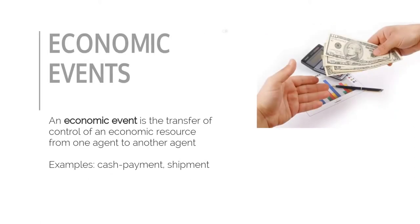Economic events are about transferring value between agents. More precisely, an economic event is the transfer of control of an economic resource from one agent to another agent. Typical examples are payments or the shipments of goods. Often, an economic event is associated with the physical transfer of some object, but it doesn't have to. For example, when someone buys a piece of land, there is an economic event, but there is no physical movement involved.